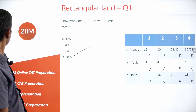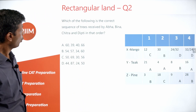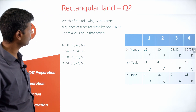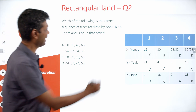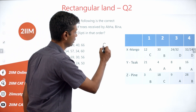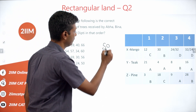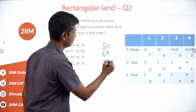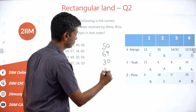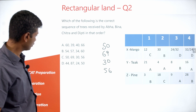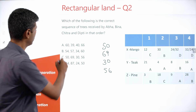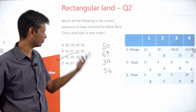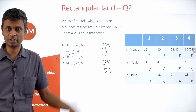Question 2: What is the correct sequence of trees received by A, B, C, and D? Ava got 50, Bina got 69, Chitra got 30, Deepti got 56. So the sequence is 50, 69, 30, 56. We know all four numbers without guessing from answer choices.